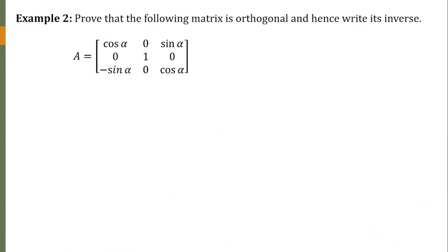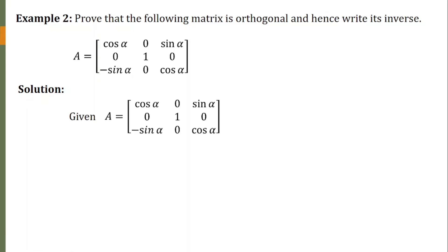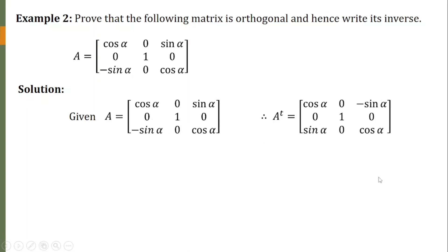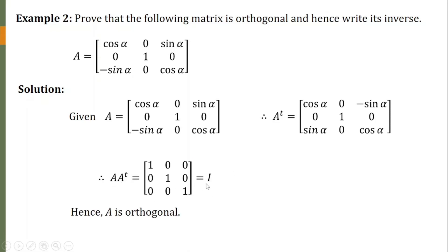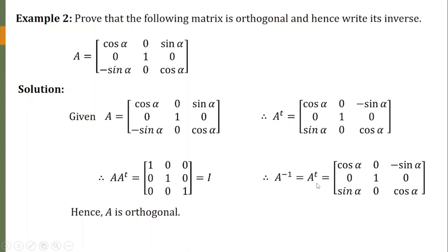The next example: prove that the following matrix is orthogonal and hence write its inverse, where A is a 3×3 matrix whose entries are trigonometric functions. We handle this the same way as the previous question. First, find the transpose of this matrix — A-transpose is obtained by exchanging rows with columns. Then we obtain the product of A and A-transpose, and we find that A times A-transpose equals the identity matrix. So A is an orthogonal matrix, and A-inverse is its transpose.